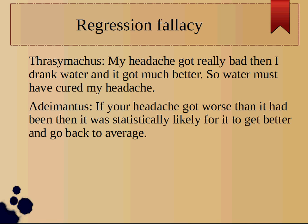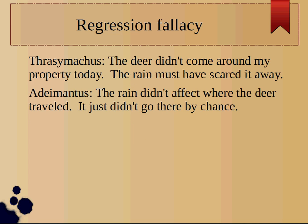And Mantis points out: If your headache got worse than it had been, then it was statistically likely for it to get better and go back to average. That's what's known as regression to the mean. Overall, Thrusimica's headache is going to be average, and it's not likely to stay as bad as it has ever been, because that would change the average. So it's likely to get better and stay around average.